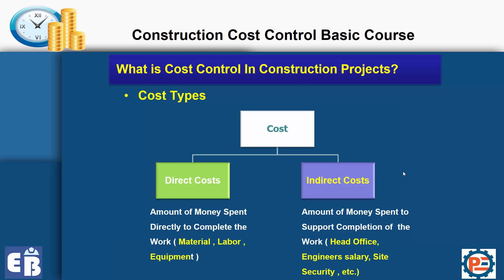So what are the costs? We have two types: direct cost and indirect cost. Direct cost is the amount of money spent directly to complete the work — like material, labor, and equipment, whatever is required to complete an activity. Indirect costs are the amount of money spent to support the completion of the work, like head office fees, engineers' salaries, site security, etc. You cannot load this indirect cost into one single activity.